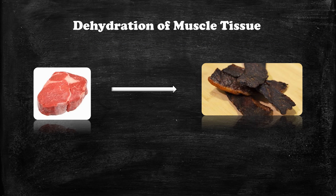An excellent way to understand how important water is to muscle tissue is seen on the screen. If you've ever had beef jerky, they start with a piece of steak and they remove all the water by dehydrating it to give you the finished product. Your skeletal muscle is very similar. Water plays a part in not only the appearance of your muscle tissue and the volume, but it also plays a part in the function of the muscle tissue. So the next question will be: how does your muscle tissue hold on to water?